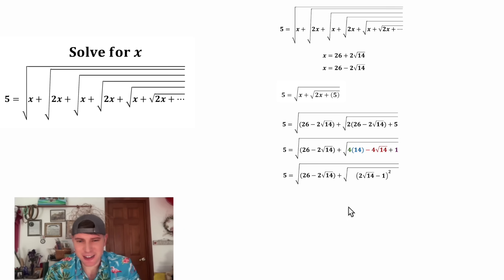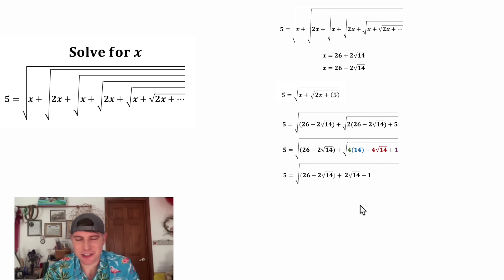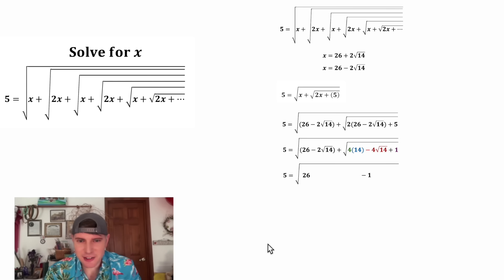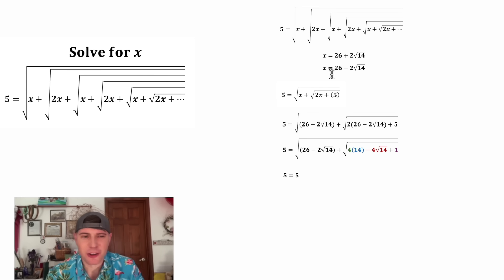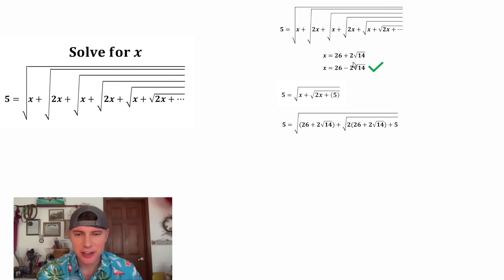I think that's pretty cool. Now the square root and the square cancel each other out, and we get to combine like terms. The negative 2√14 plus 2√14 becomes 0 — they cancel. 26 minus 1 is 25, and the square root of 25 is 5. We were able to simplify all of this down to 5. The lower solution x equals 26 minus 2√14 checks out.